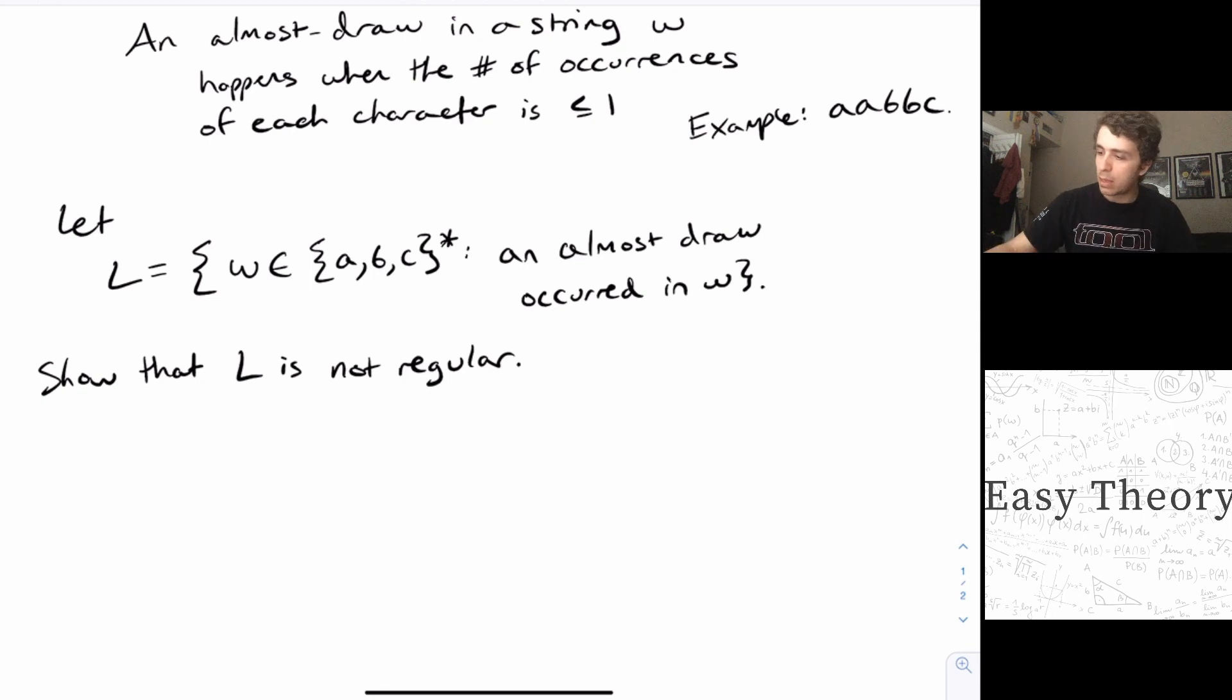So today we're going to be looking at this particular problem which is dealing with checking whether there's an almost draw within an election. For example, if we have three candidates A, B, and C, then if we look at this string right here, the number of each of the characters is at most one in difference. So there are two A's, two B's, and one C. So we say that we have an almost draw if it's either a draw itself or the number of occurrences is at most one in difference.